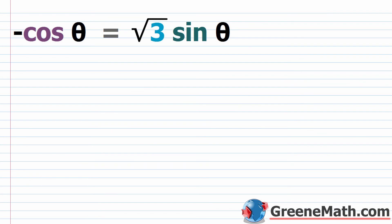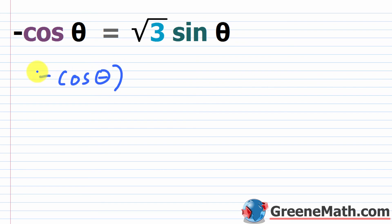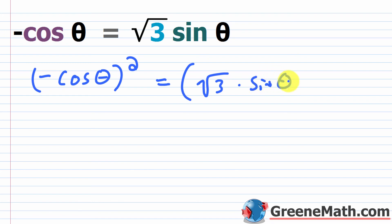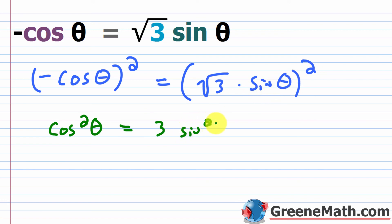Now a very tedious type of problem involving squaring. Recall from algebra: if you square both sides of an equation, you lose information and may get extraneous solutions that don't satisfy the original equation. You must check solutions in the original. We have: negative cosine theta equals square root of 3 times sine theta. Square both sides to get rid of the radical, and since we have both cosine and sine, we can apply a Pythagorean identity.